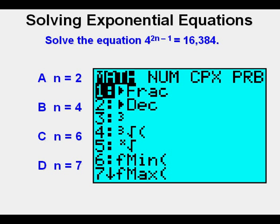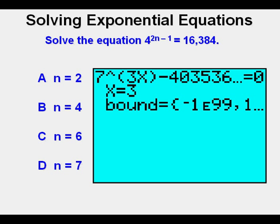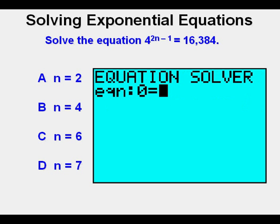We'll use the same methods to solve this one in the graphing calculator. First go to the equation solver by pressing math, scroll down to 0 for solver. Press enter. Clear the equation out by pressing the up arrow then clear. Enter the equation solved for 0 as 4 to the power of 2n minus 1 minus 16,384. Note that the 2n minus 1 is wrapped in parentheses. Also note that in equation solver we don't have to use x. We can use other variables besides x here.